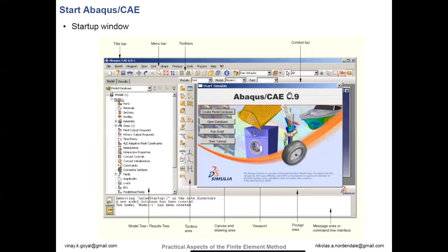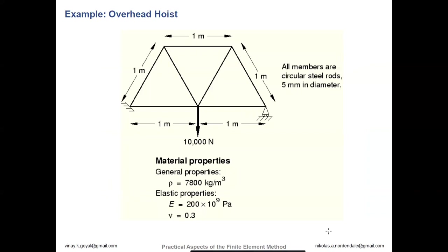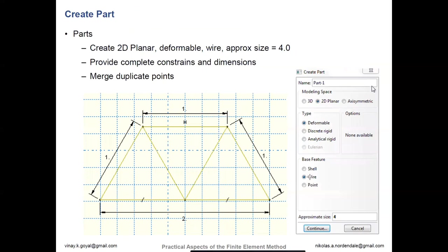We'll give an overview of how Abaqus CAE works, shown in version 6.9 from around 2009 — this is a little dated in look, but the general layout is the same. Given the material properties as well as the dimensions and the cross-section, first you create the part. You go into the sketcher and choose what type of modeling space you want — in this case, the 2D modeling space. We want these structures to be deformable, not rigid. If it's rigid, you can't actually determine any stresses or strains from them. The base feature is going to be wires — this is a truss model.